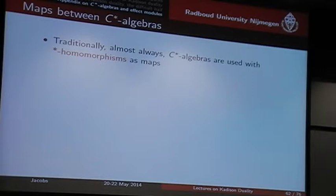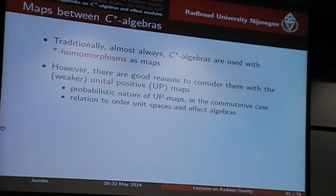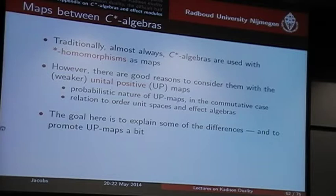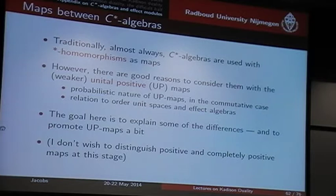So, traditionally, C*-algebras are studied in combination with so-called star-homomorphisms. However, there are good reasons to look also at other morphisms, namely the positive unital maps — the UP maps. The reasons are the probabilistic nature of these kind of maps, and also their relation to these order unit spaces and Riesz spaces as well. My goal now is to explain a bit about these differences — where they arise — and maybe also promote these UP maps.